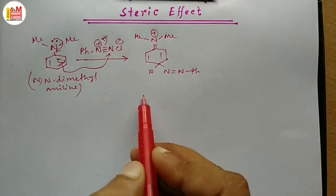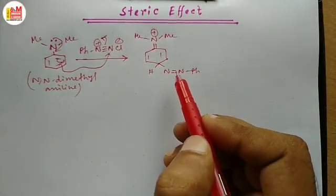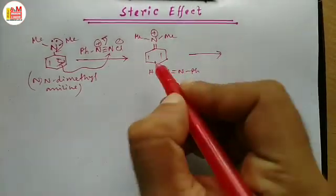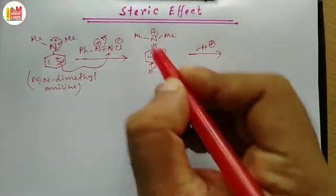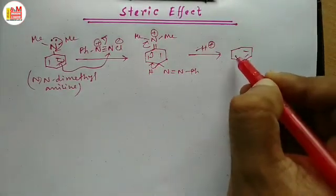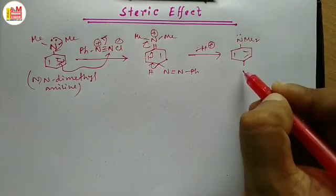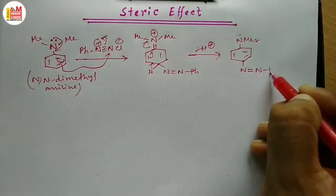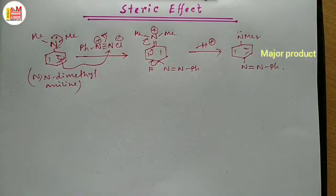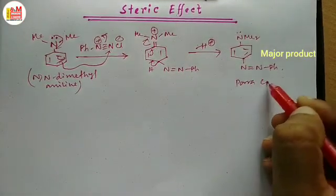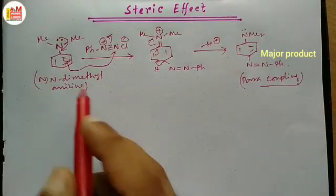In this step we can see that the benzene ring has lost its aromaticity. In the second step, with the loss of H⁺, it will get back its aromaticity, and this is the product. So this is the para coupling.